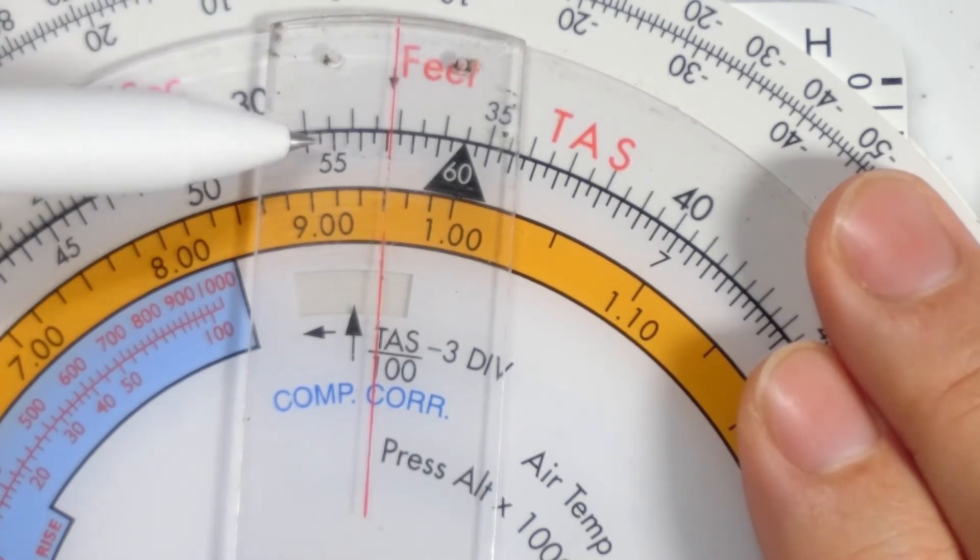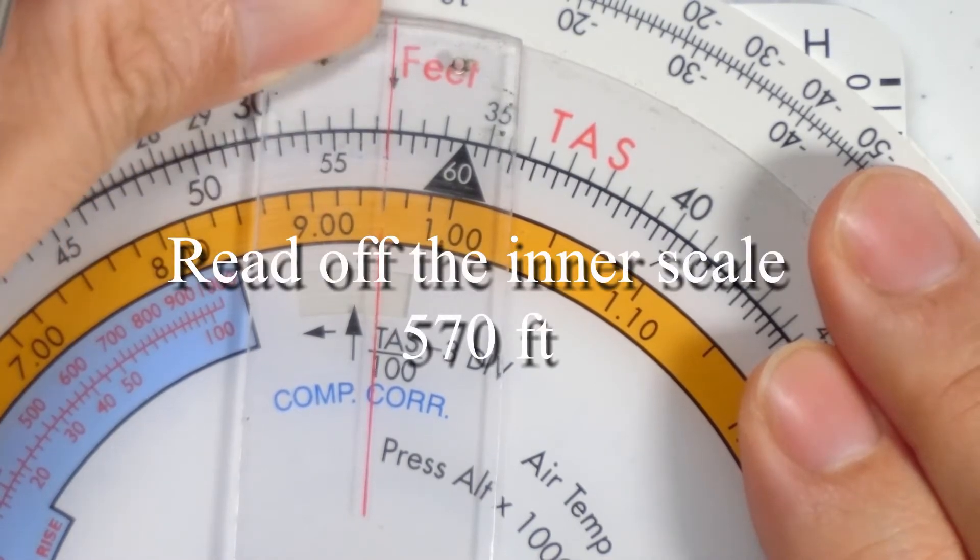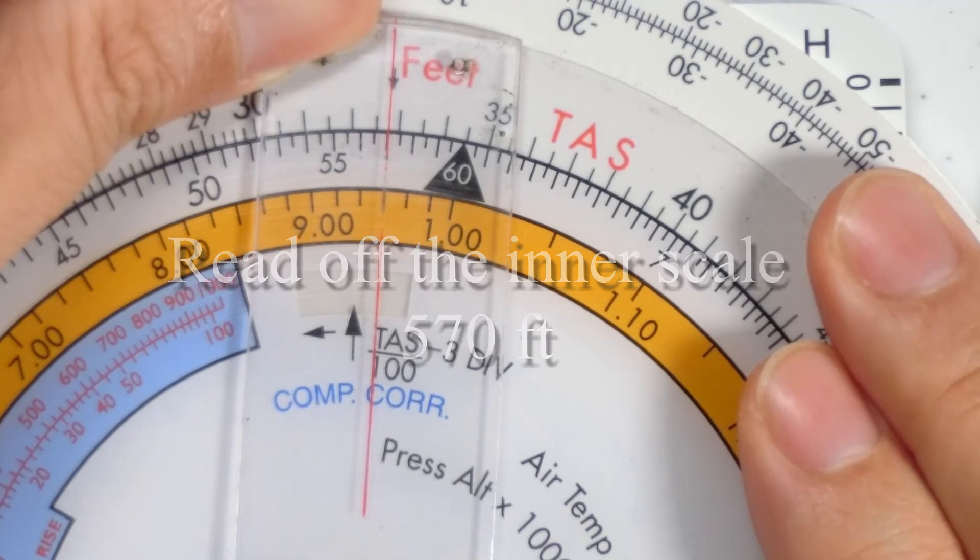Well, 174 meters equals 550, 560, 570 feet. Okay, so we push down on the CRP so we don't get a parallax error and we read off that.